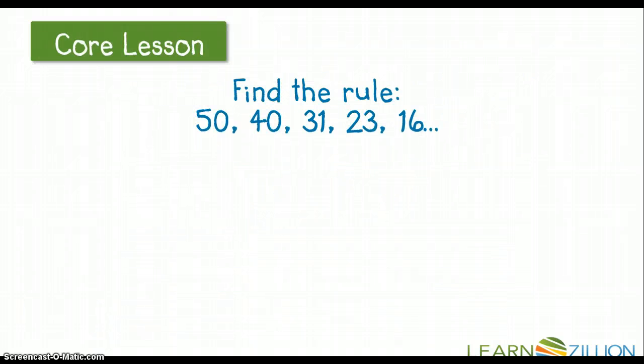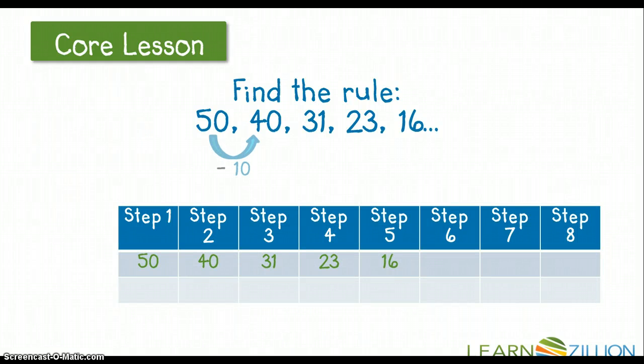So we're going to find the rule with these more challenging numbers. And these were the numbers that you saw in the beginning of our video. So we have the numbers 50, 40, 31, 23, and 16. And right now, I'm really not seeing a common pattern between these. I can see that from 50 to 40, I subtract 10. But then when I get from 40 to 31, I know that's not the case. Because if that were the case, it would be 40 to 30, then 30 to 20, and then 20 to 10. So that's not the case. That's not the pattern that I have. So I have to think of something a little bit different.